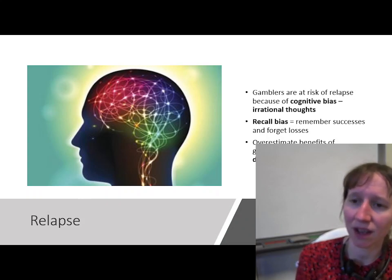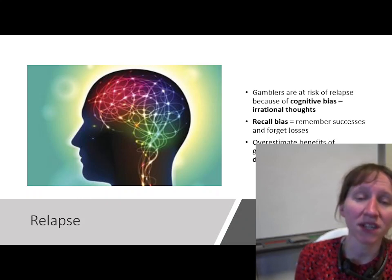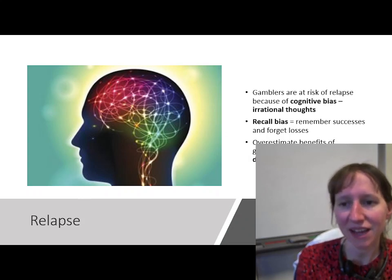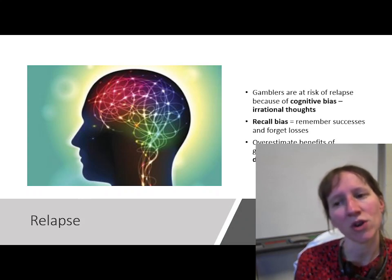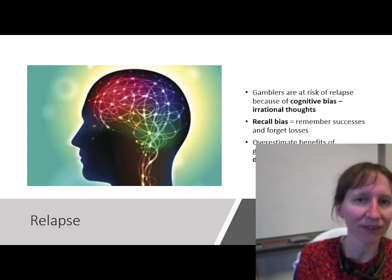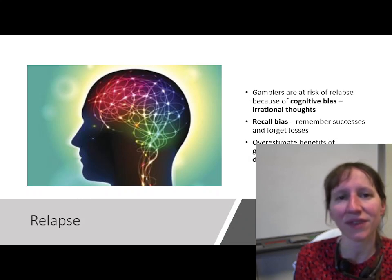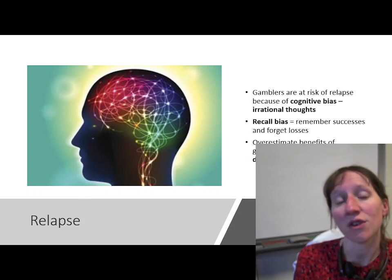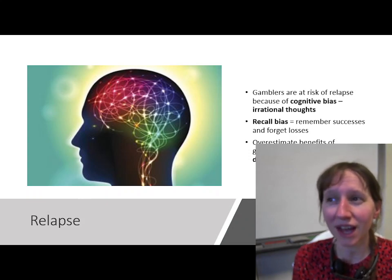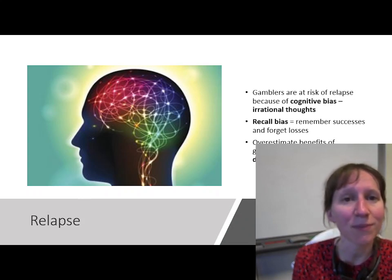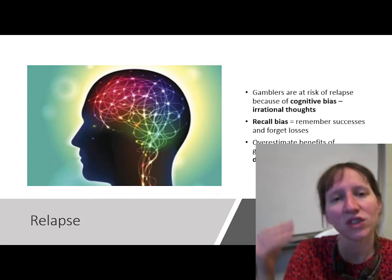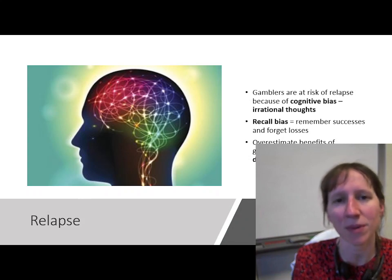Relapse can also occur. If someone is trying to quit gambling and thinks back to what it was like, they may have something called recall bias — where they remember really well the things they won on. They remember their successes but selectively forget their losses. This is another distorted cost-benefit analysis where they think, should I do it again? Well, there was that really great time — forgetting all those other bad times. So it's another faulty thought process identified in people addicted to gambling.